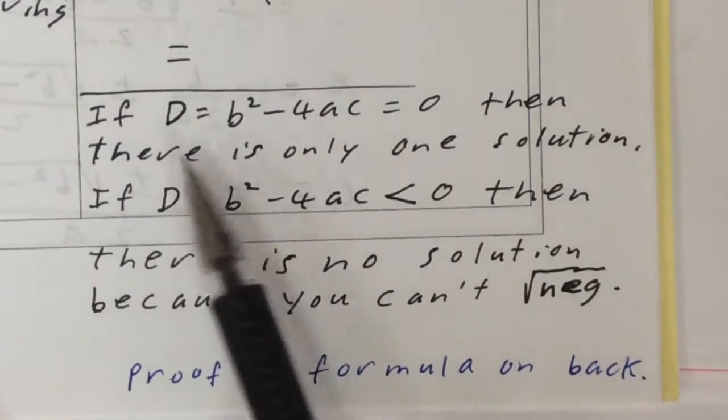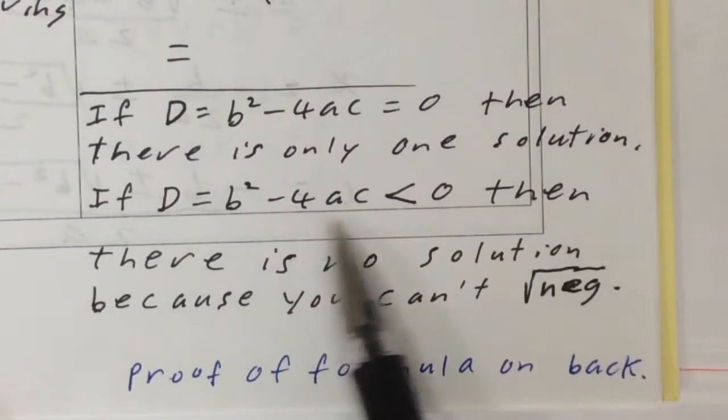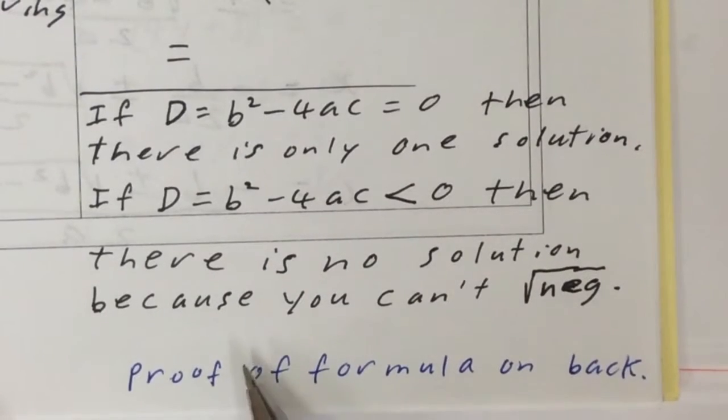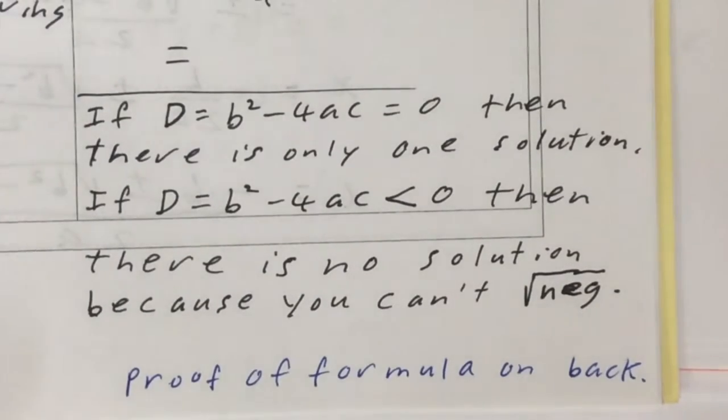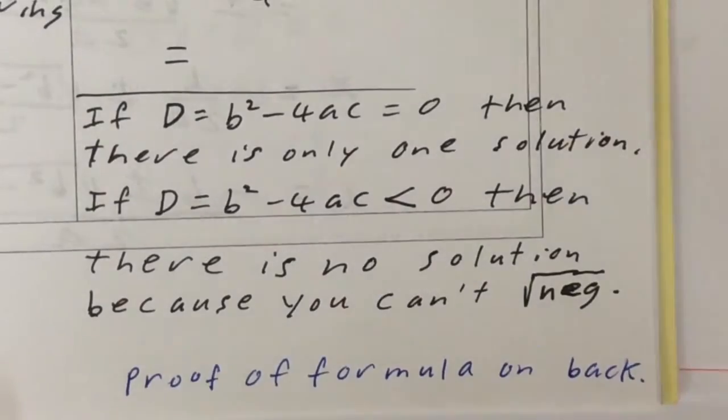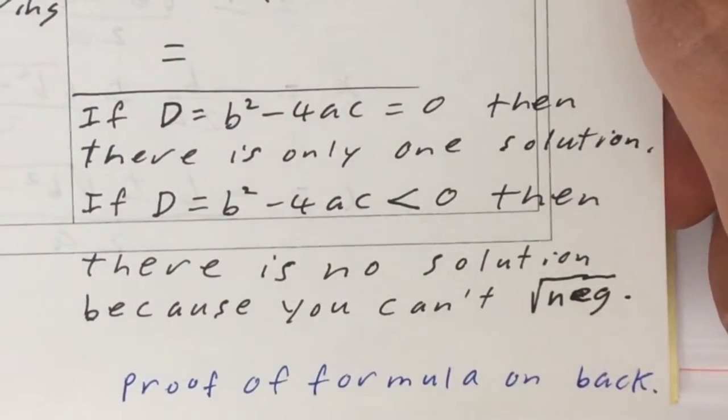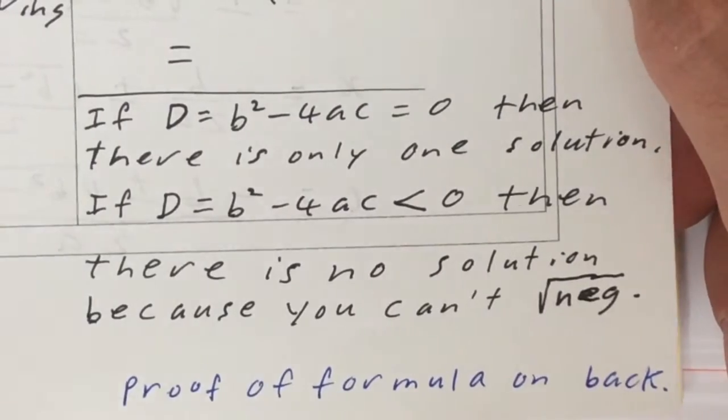So the discriminant is 0, there's only one solution. If it's negative, then there are no solutions. Now, where did this formula come from? So in the last video, we looked at solving the quadratic equation by completing the square. The quadratic formula is just the result of that. So if you did that process, and I'll show you here.